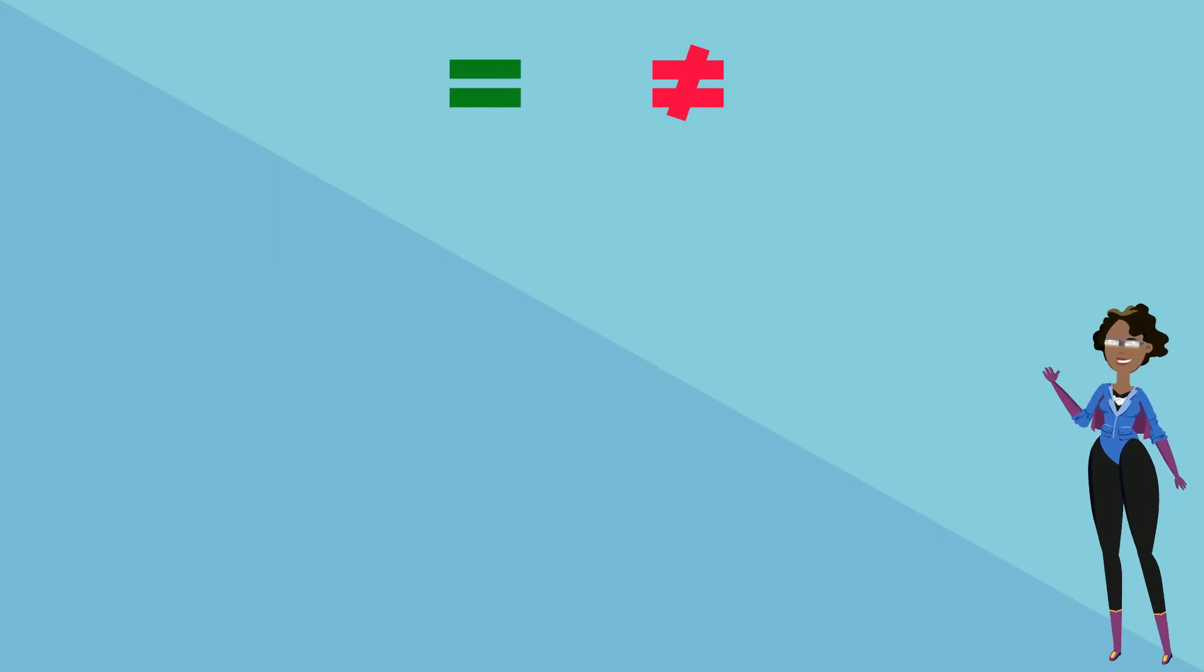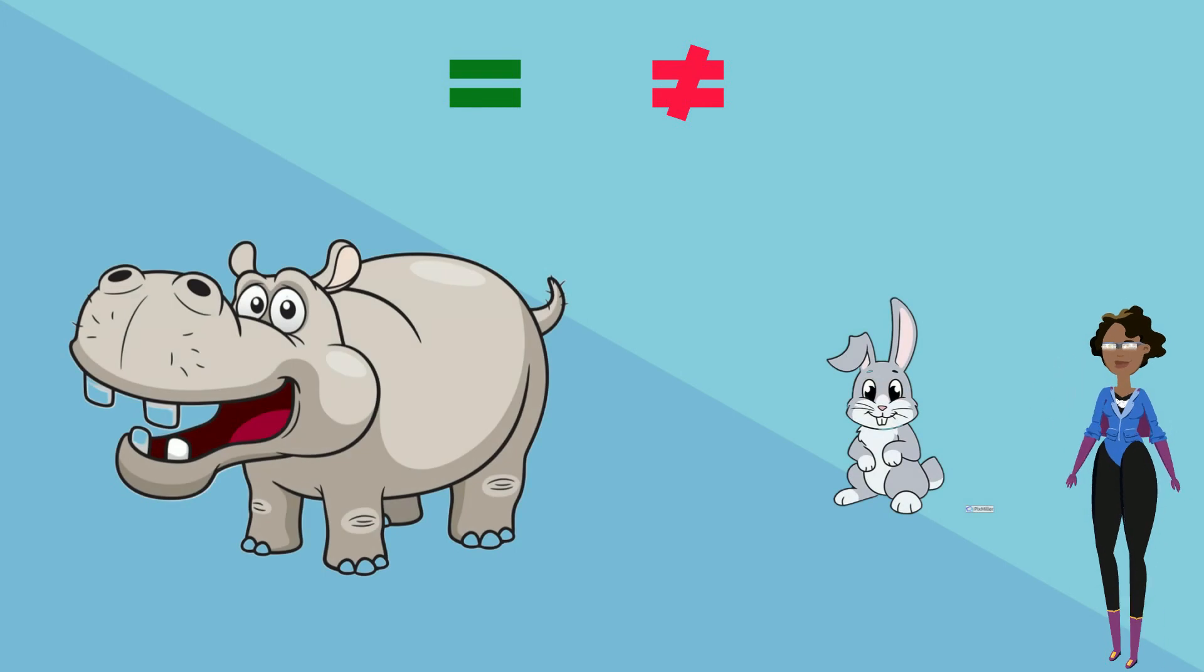Look at these hippopotamus and rabbits shown. Are they equal or unequal in weight? Well, the hippopotamus weighs a lot more than a rabbit. Therefore, the correct sign would be unequal.